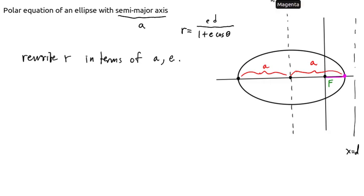So let's start by plugging theta equals 0 into our equation of the ellipse. r of 0 is equal to e times d over 1 plus e times cosine of 0. Cosine of 0 is, of course, 1. So this is just e times d over 1 plus e.